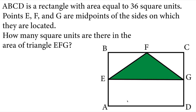ABCD is a rectangle with area equal to 36 square units. Points E, F, and G are midpoints of the sides on which they are located. How many square units are there in the area of triangle EFG?